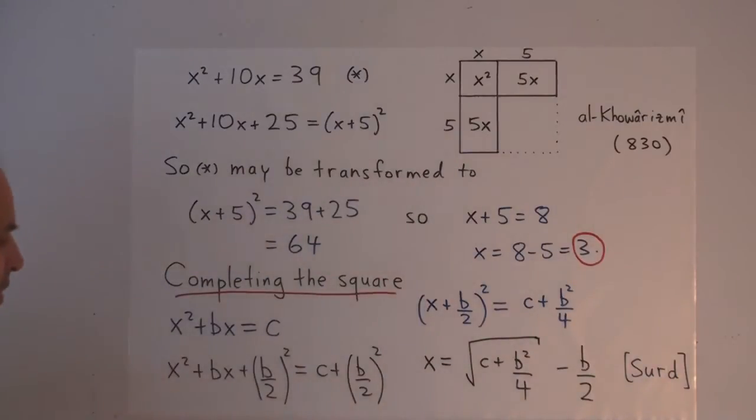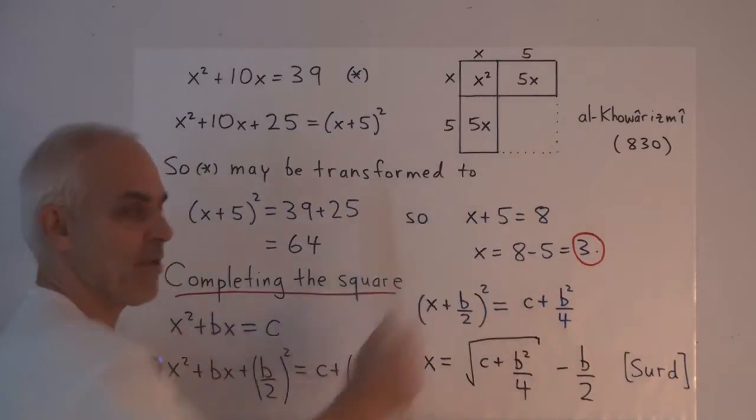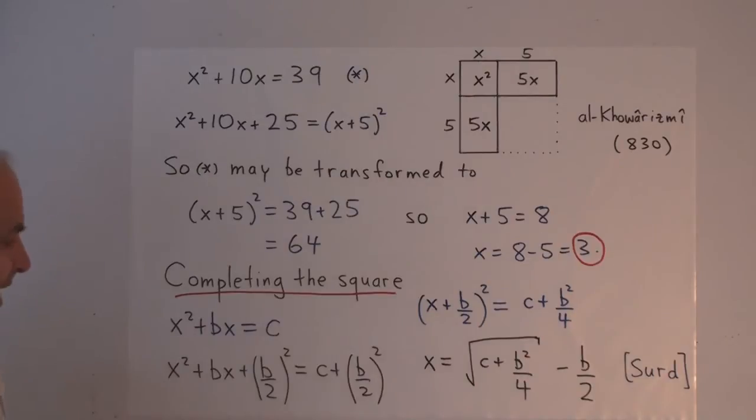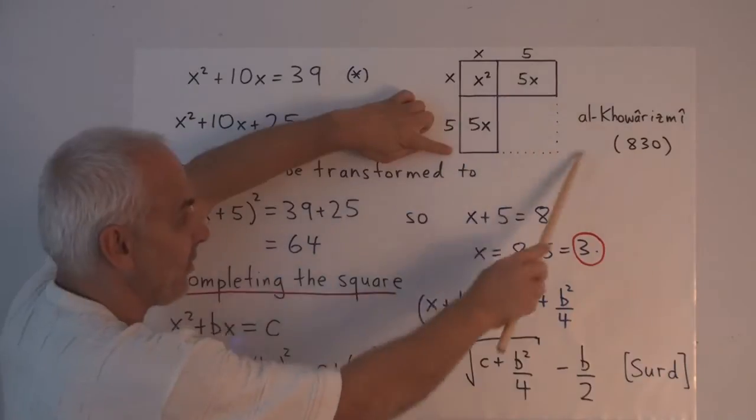So what do we do? Well, we mimic what we did up here. We add b over 2 squared to both sides. That's the little square that we're adding there.